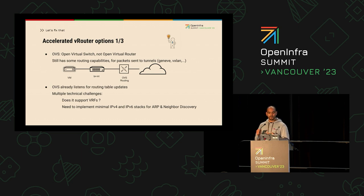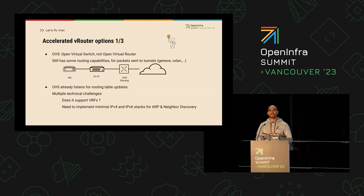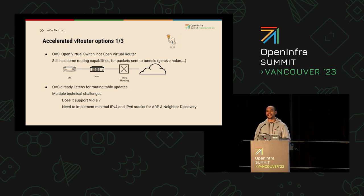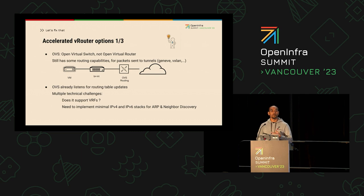But OVS was definitely meant only for tunnels and tunneling. Does it support VRF? Does it support IPv4 and IPv6 stacks in order to answer ICMP messages or neighbor discovery messages? As of today, no. This is really only a Layer 3 switch, which means that we would have to implement all those different features to transform it into a router. And because it's a switch and not a router, we also have additional issues — for example, what if you have an MTU mismatch? You cannot fragment the packet. It's not an issue with IPv6, but we still have a lot of IPv4 workloads. Even on the upstream community, this would be extremely difficult to integrate. Not impossible, but transforming a switch into a router would require a lot of effort — and we need that feature now.